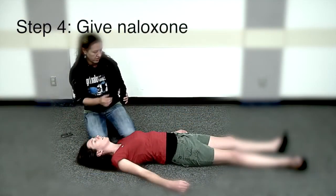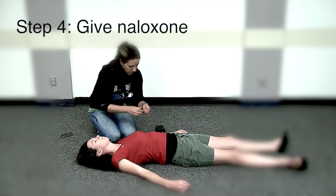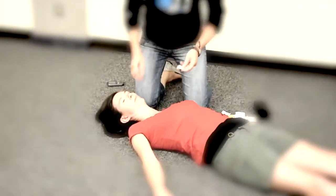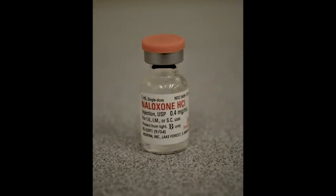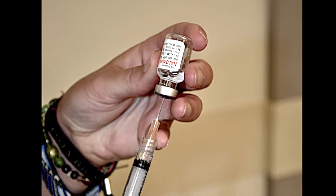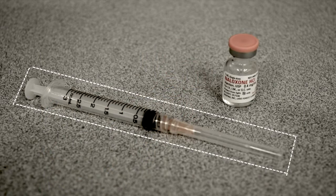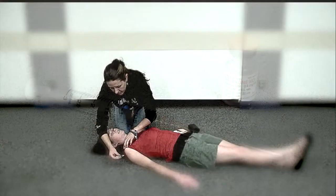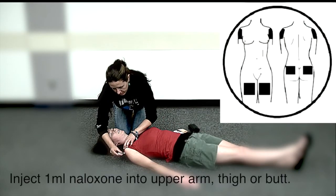Step 4: Give naloxone. If the person is still not breathing, it is time to use your naloxone. If possible, use an alcohol wipe to clean the skin where you plan to inject. Remove the orange cap from your vial of naloxone. If you have a small 1 mL vial, draw up the whole vial into a syringe. If possible, use a muscling syringe with a 1 to 1½ inch needle that is 25 gauge or lower. Insert the needle at a 90 degree angle and push in the plunger. Inject the entire 1 mL of naloxone into their upper arm, thigh, or butt.